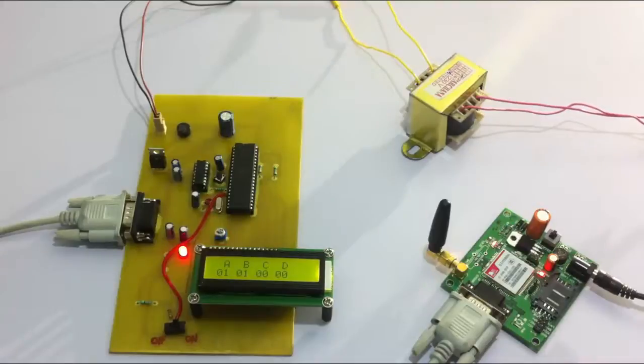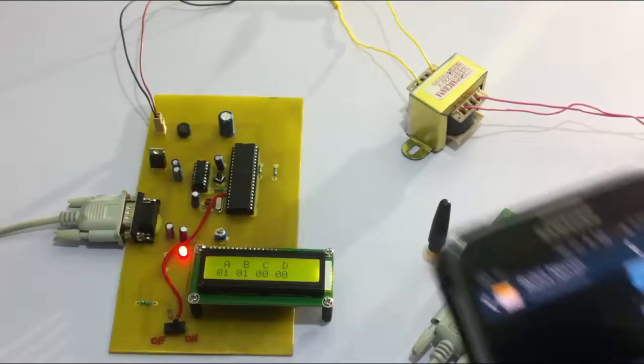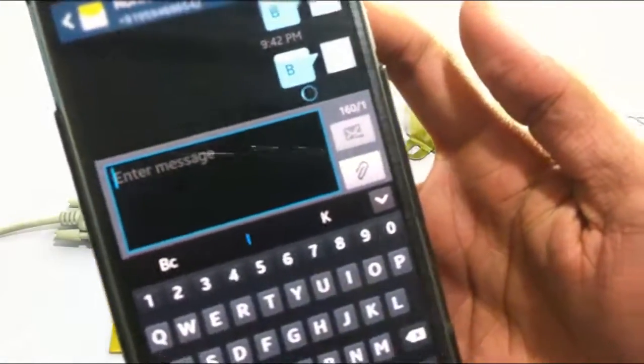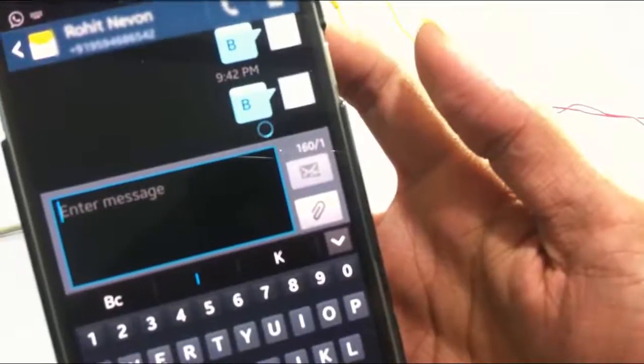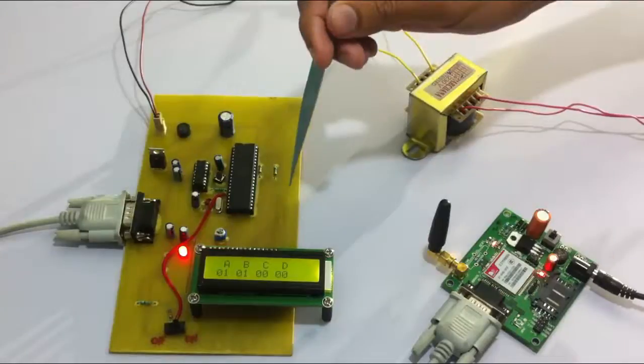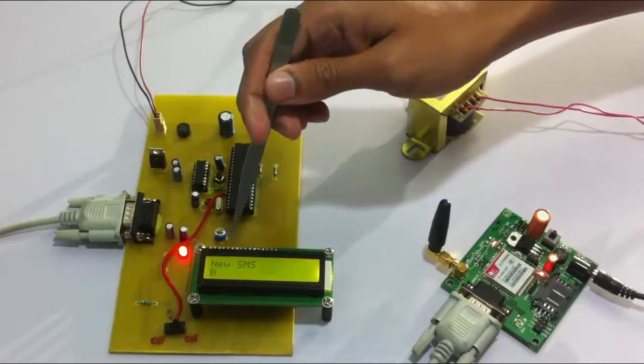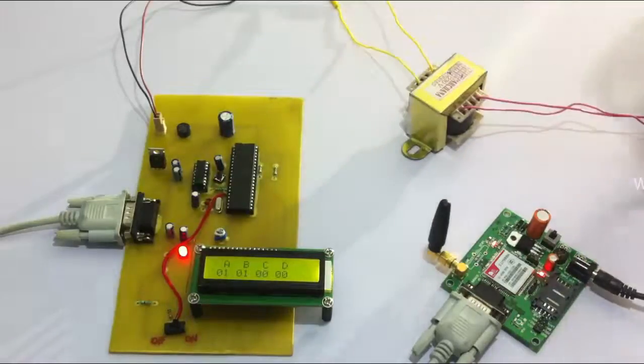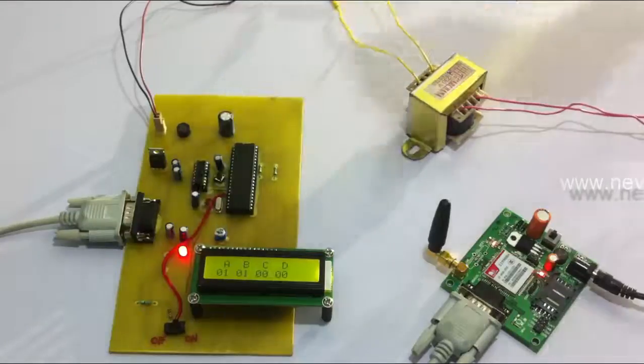So one more important feature here is that one user, that is one mobile number, can only vote once. So if we send another vote from the same mobile number to any candidate, let's send another vote from the same mobile number. As soon as the SMS is received here, it shows new SMS B and then it's showing double voting. So voting is denied for that particular mobile number and the results are the same.